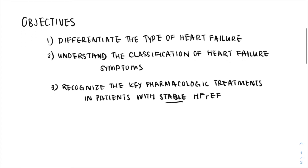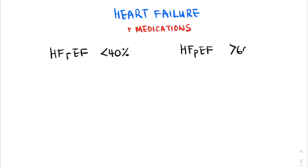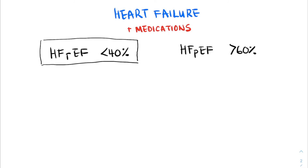When you think about heart failure patients, the first differentiation to make is whether they have heart failure with reduced ejection fraction, which is typically considered less than 40%, or heart failure with preserved ejection fraction, which is typically greater than 60%. The ejection fraction can be found on the patient's most recent echocardiogram. Remember that ejection fraction can worsen or improve over time and it is not a static number. Let's focus on patients with heart failure with reduced ejection fraction from here on in, as this is typically a more common presentation on our medical units and is better studied in the literature.